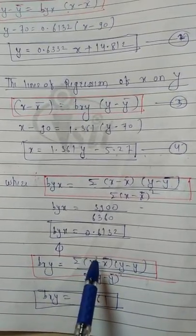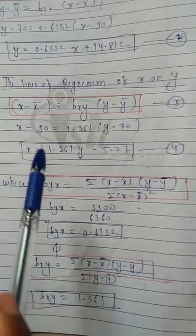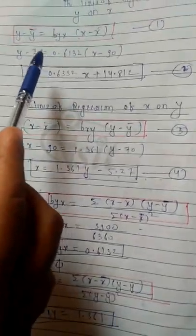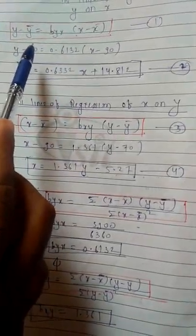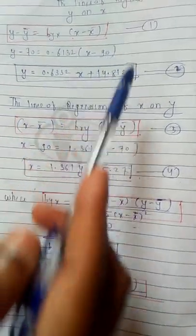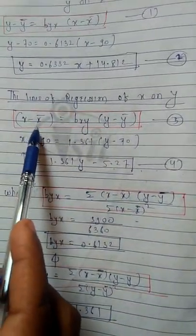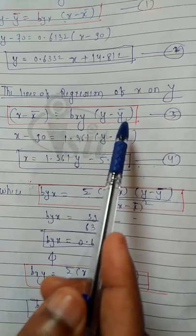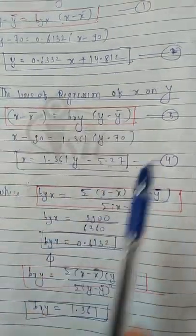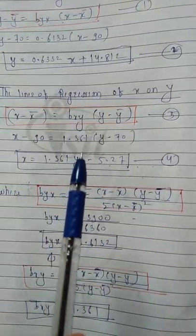For both regression lines — y on x and x on y — we require x-bar and y-bar. We will find all these calculations by using a table.